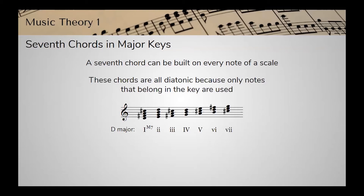For the three chord, adding an E above the C sharp gives us a minor seventh between F sharp and E — a minor triad with a minor seventh — another minor seventh chord, written as lowercase iii seven. The four chord was a G major triad; adding F sharp as the seventh gives us a major seventh interval, resulting in a major seventh chord. We write M7 next to that uppercase IV.